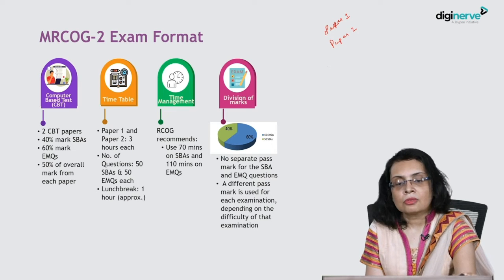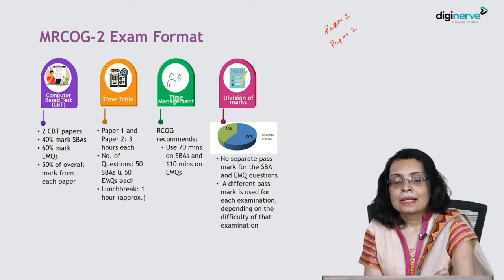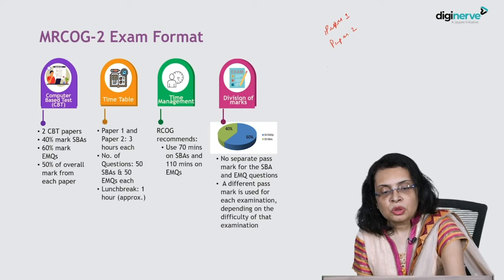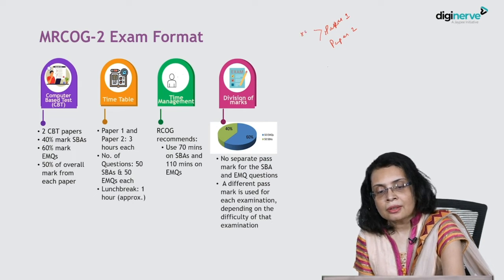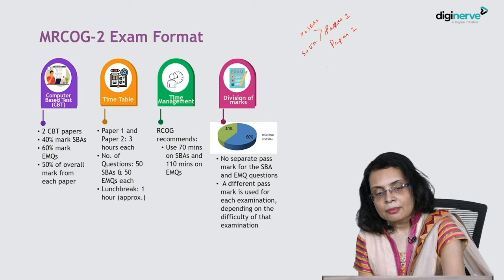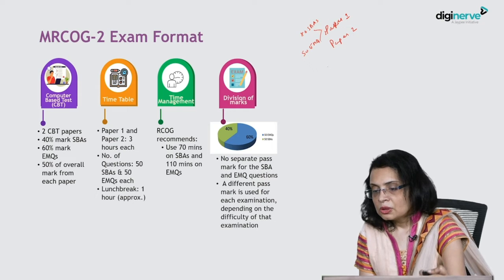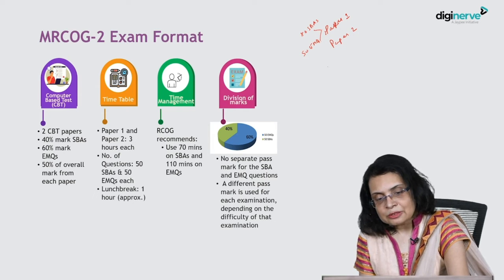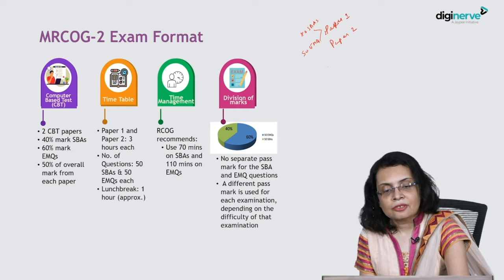The difference from the Part 1 exam is that instead of just SPAs, here you also have EMQs. So you will have 50 SPAs and 50 EMQs in each paper, giving a total of 100 SPAs and 100 EMQs across both papers.